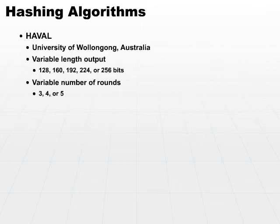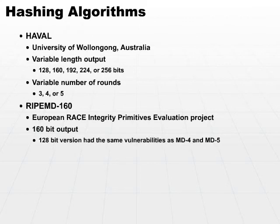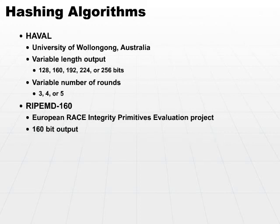The last algorithm in our list is the RIPEMD-160 algorithm. This comes from the European RIPE Integrity Primitives Evaluation Project. The 160 algorithm uses a 160-bit output. There was a previous version, RIPEMD-128, which produced a 128-bit output, but it had the same vulnerabilities that were uncovered with MD4 and MD5. So the algorithm was strengthened to its current 160-bit output version, which is very secure at this point.